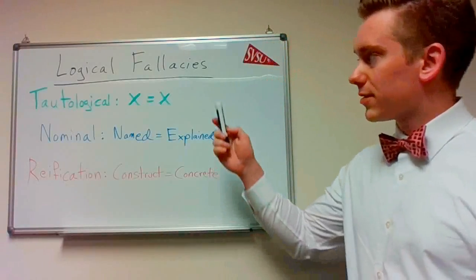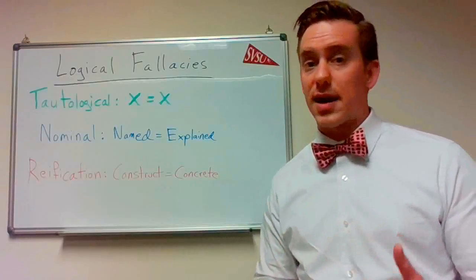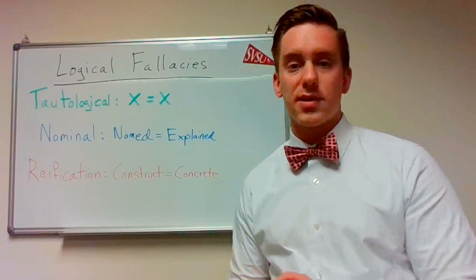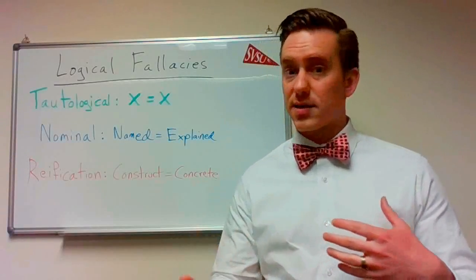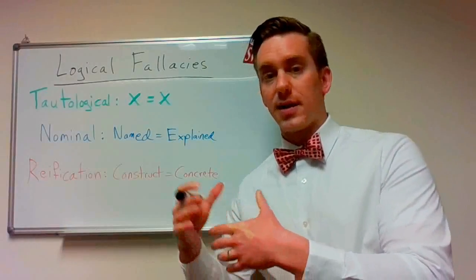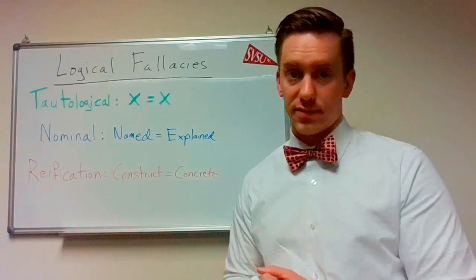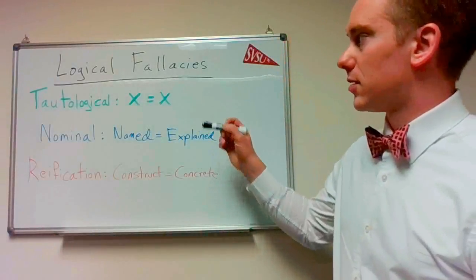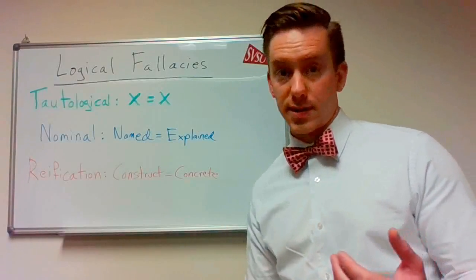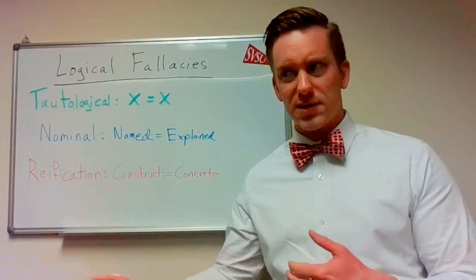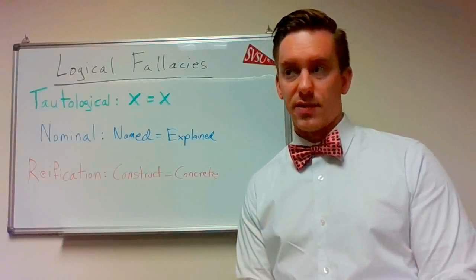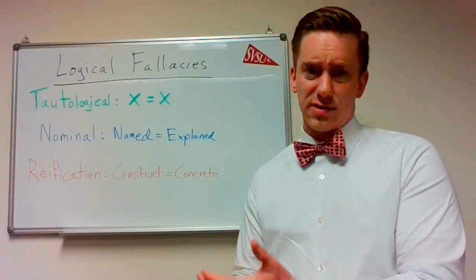So the first one here, the tautological fallacy, or in other words a tautology, is anytime when someone makes a description or a claim that essentially boils down to X equals X or they're saying the same thing twice but acting as though that gives some new or novel information. So something along the lines of boys will be boys or it is what it is. You're saying the same thing twice but you're sort of alluding to this idea that you've explained something or added some novel info which really you haven't. So that's logically a problem.